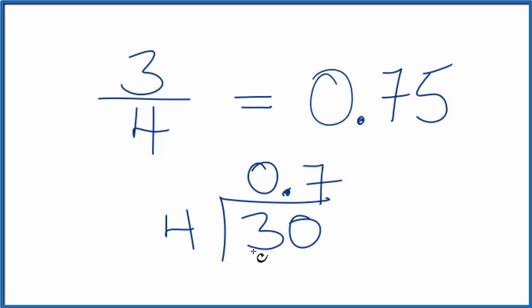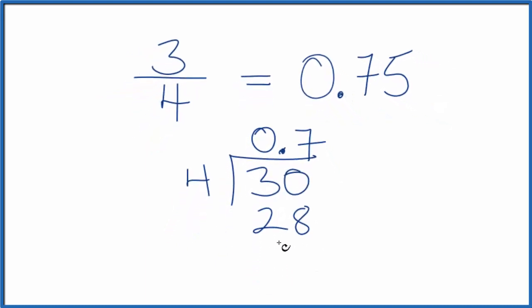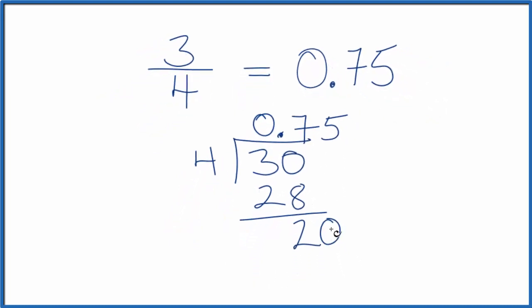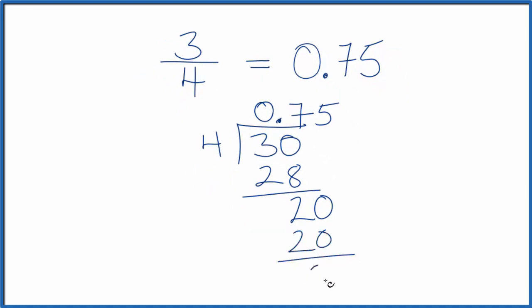So 7 times 4 is 28. 30 minus 28 is 2. Let's move this over again here. And now, 5 times 4, that's 20. That gives us zero here.